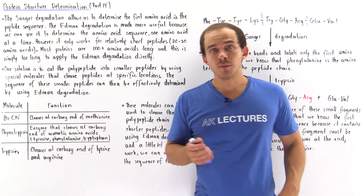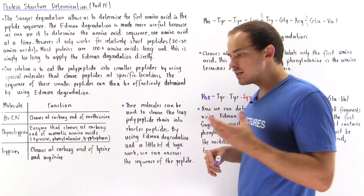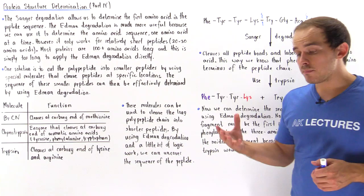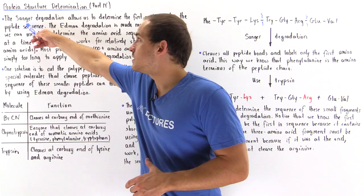Determining what the amino acid sequence in any given protein is can be a tedious and complicated matter. We have discussed two processes that help us determine what the sequence is. The less useful process is the Sanger degradation.